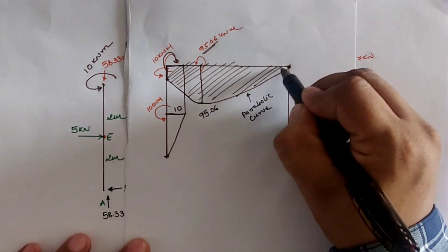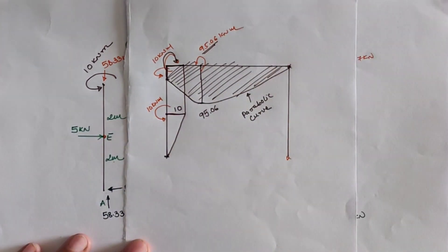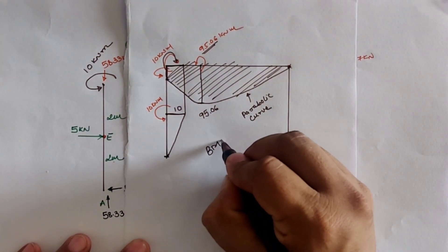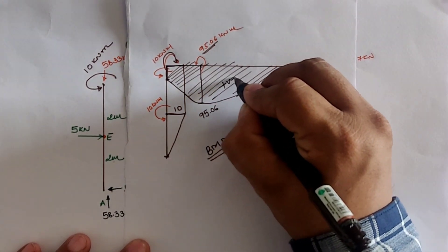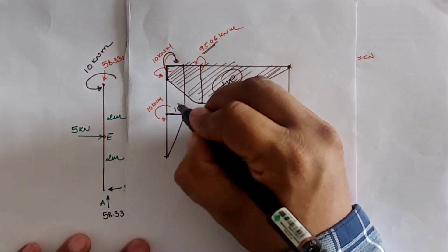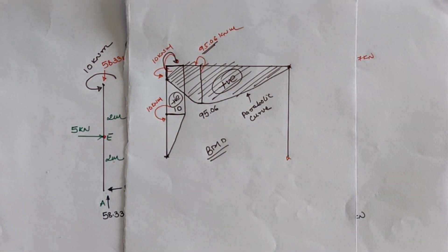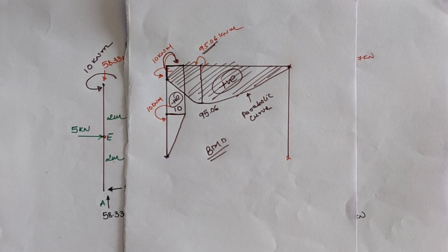This diagram represents the bending moment diagram for the given frame, where a downward diagram indicates positive bending moment. Thus we can calculate the shear force diagram, bending moment diagram, and axial thrust diagram for any given determinate portal frame using the three equilibrium conditions. Thank you.